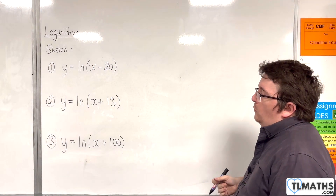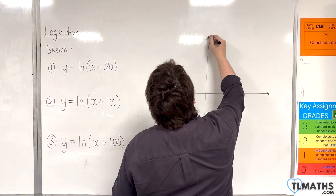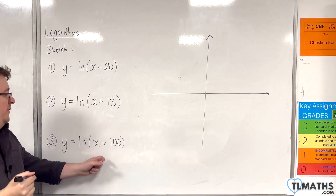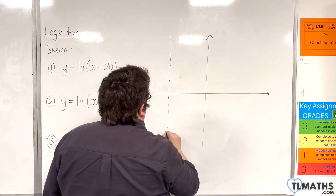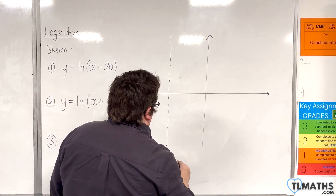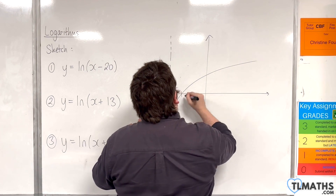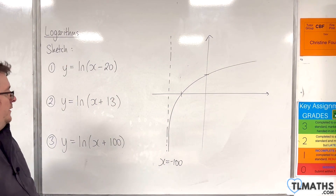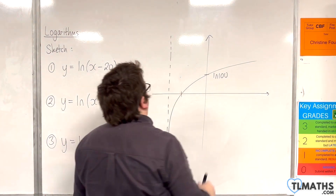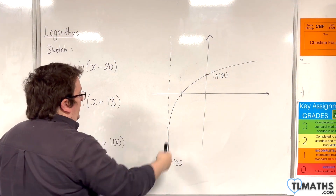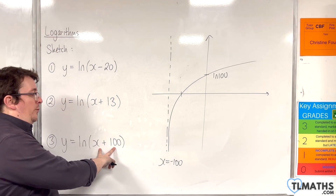Number 3: y equals the natural log of x plus 100. The vertical asymptote is when x is going to be minus 100. Then we're going to have our log curve. It crosses the y-axis when x is 0, so natural log of 100. And it crosses the x-axis when y is 0, so x plus 100 will have to be equal to 1, and so x will have to be minus 99.